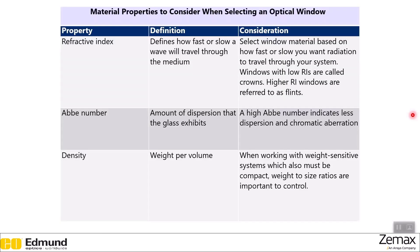The first consideration is the refractive index, which defines how fast or slow a wave will travel through the medium. Depending on the desired speed of a ray passing through your system, you'll want to choose an optical window with a corresponding refractive index. Next is the Abbe number — this corresponds to the amount of dispersion the glass exhibits, and a high Abbe number indicates less dispersion and chromatic aberration.